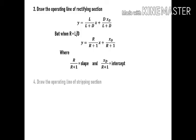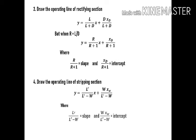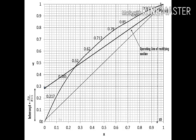The next step is to draw the operating line of the stripping section. The equation of its operating line is Y = (L'/(L'−W))·X + (W·X_W)/(L'−W), where L'/(L'−W) is the slope and (W·X_W)/(L'−W) is the intercept. From the material balance we can calculate L' and W. First, we plot the point (X_W, X_W), then using the slope or intercept we draw the operating line of the stripping section from that point.